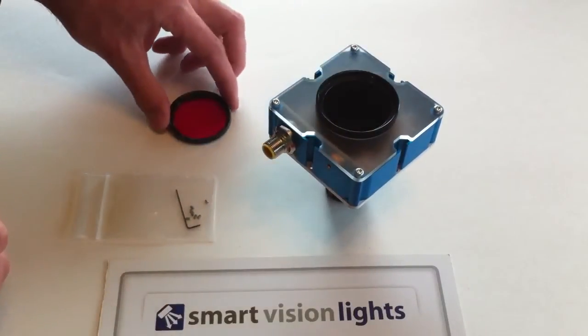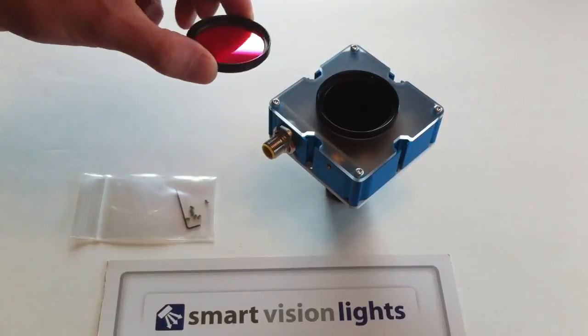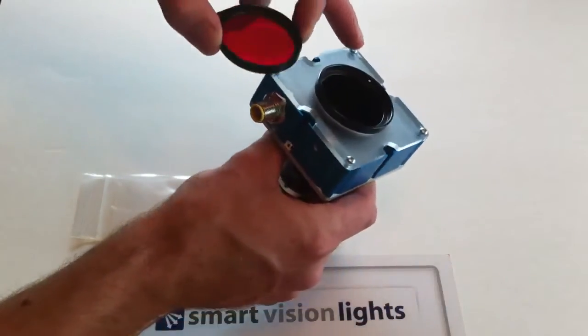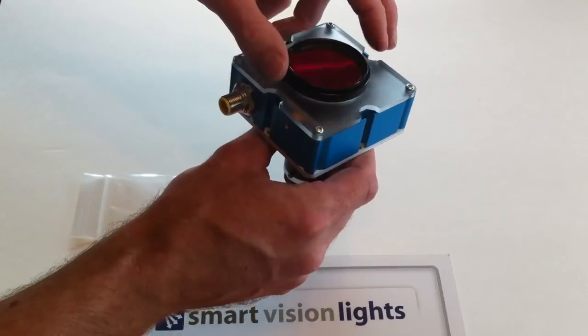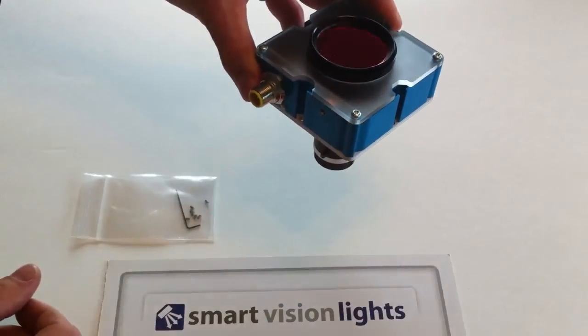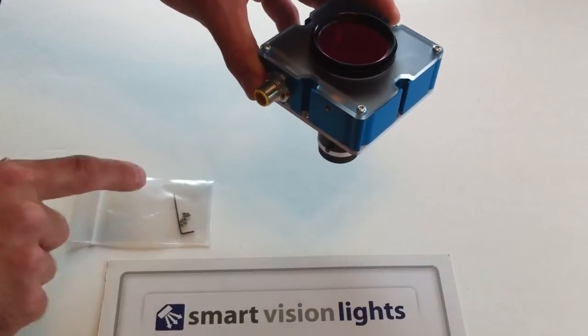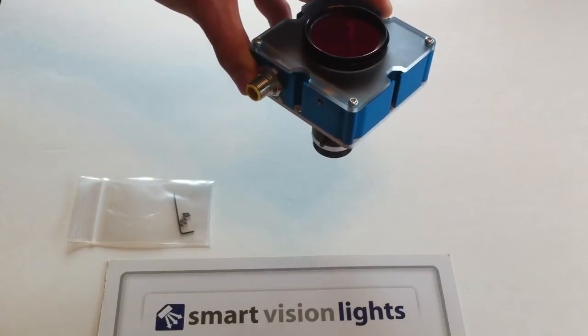Now, if your application requires the use of a machine vision camera filter, the front of our light has a recessed lip with set screw holes. The filter would drop in and tighten in with set screws that are provided in the kit.